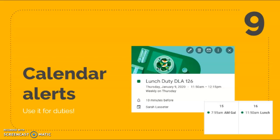Number nine — this one saves me all the time. I set calendar alerts for any duties and responsibilities I have on a recurring basis, because as a teacher things can get really busy throughout the day. For example, I have a lunch duty set as a recurring event with a 10-minute alert prior to it. If I'm teaching, I get an alert on my watch, computer, or phone so I never miss a duty. For my early morning duty, I sometimes have the alert set for the night before so I don't forget to wake up early.